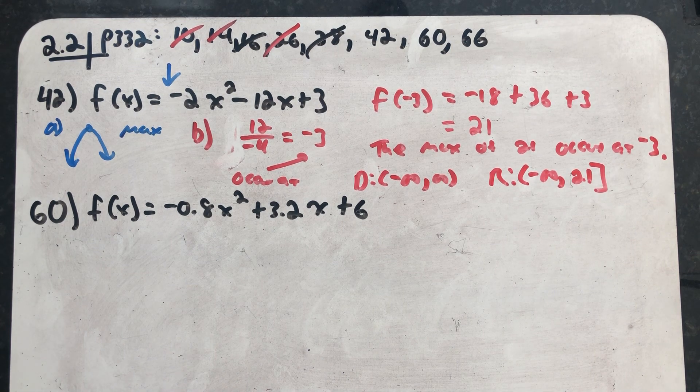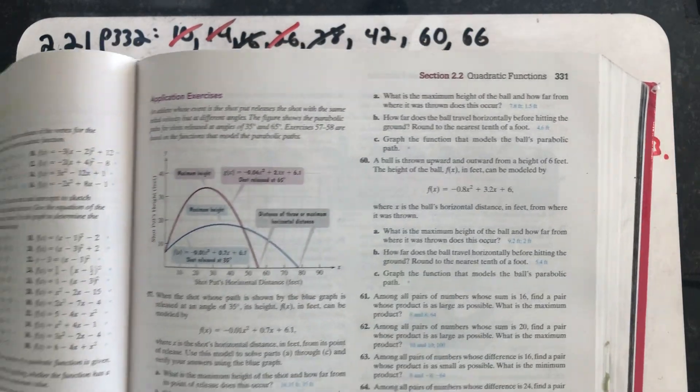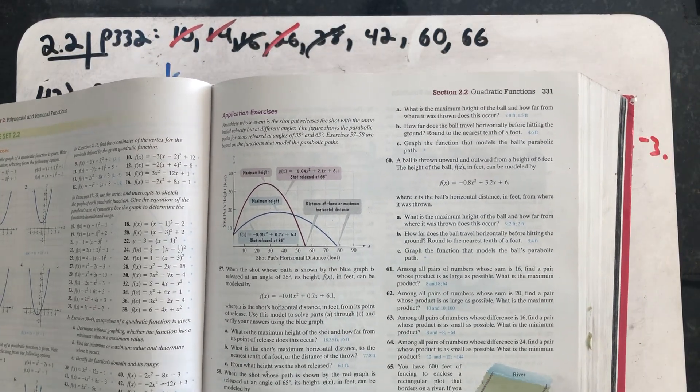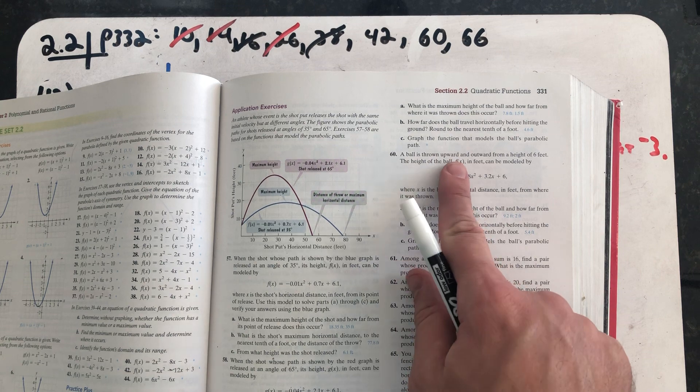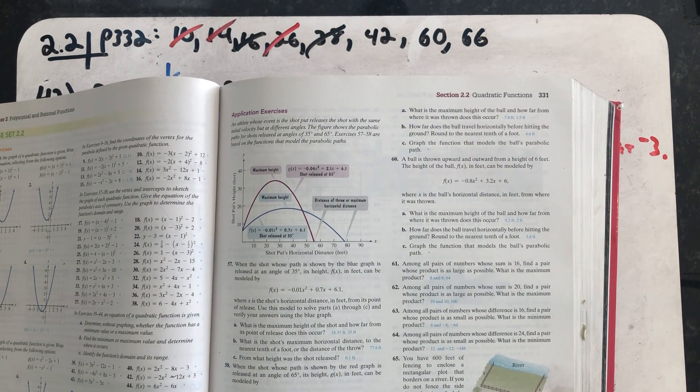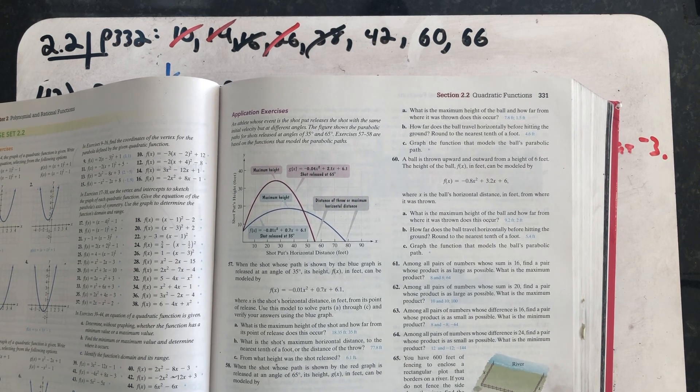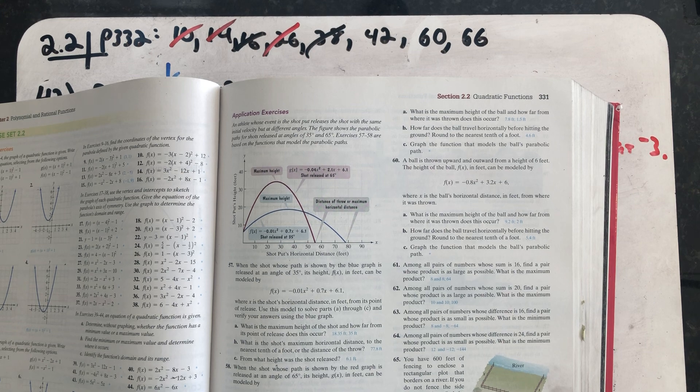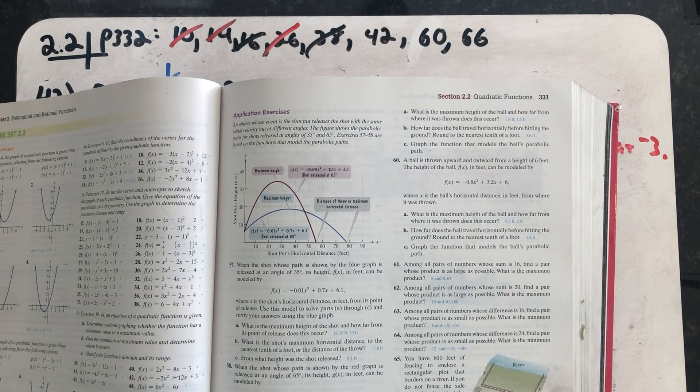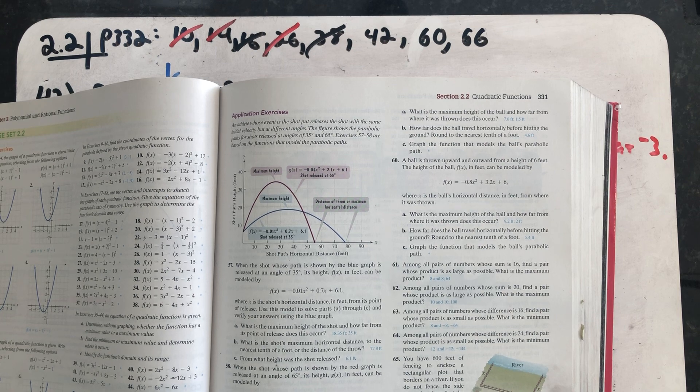Question number 60 gives me a question about a ball thrown upward and outward. A ball is thrown upward and outward from a height of 6 feet. The height of the ball, f of x in feet, can be modeled by this quadratic equation: f(x) = -0.8x² + 3.2x + 6, where x is the ball's horizontal distance in feet from where the ball was thrown.